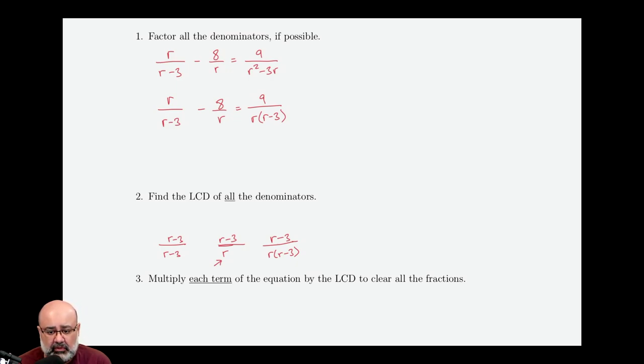A common mistake here is students think that they can cancel this r with this r, which cannot be done. You can only ever cancel something on the numerator with something in the denominator, as long as there's products everywhere. This is not a product. So you cannot actually cancel anything in the numerator with anything in the denominator. So to cancel out this r on the bottom, we actually need a separate r altogether. So we multiply that r in the numerator.